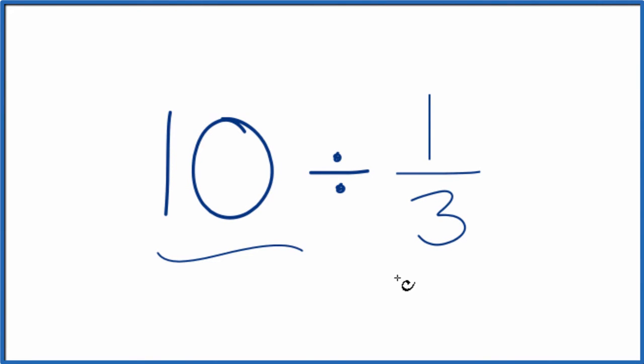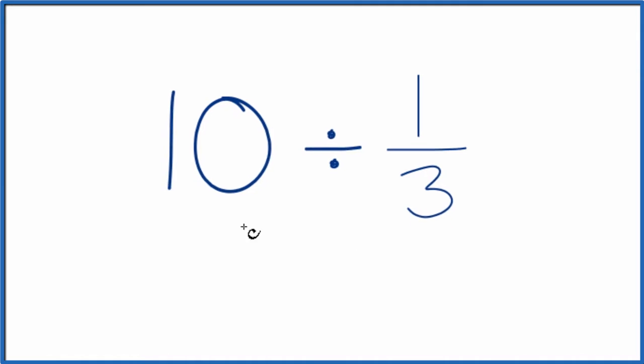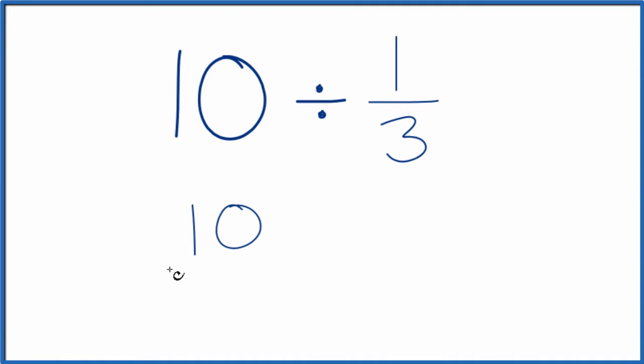Here's how you divide 10 by one-third. So first off, let's call this 10 over 1. It's still 10 because we're just dividing by 1, but now that we have a fraction, that'll make this easier.